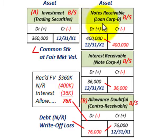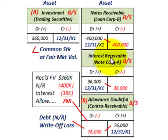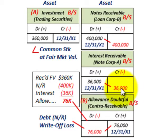Bank B is writing off or giving up the notes receivable and interest receivable in exchange for the common stock received. The notes receivable had a debit balance of $400,000 — Bank B credits it for $400,000 to remove it from the books. The interest receivable had a debit balance of $36,000 — Bank B credits that for $36,000 to write it off as well.